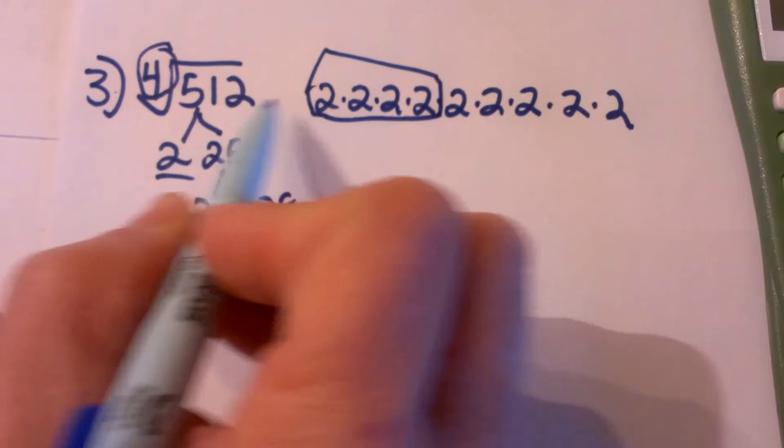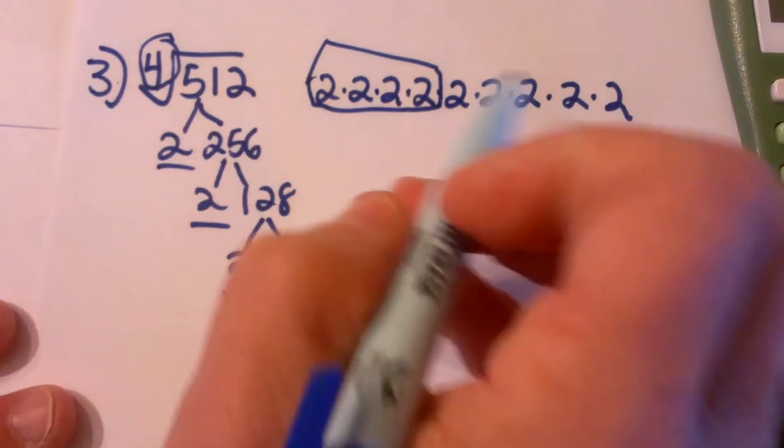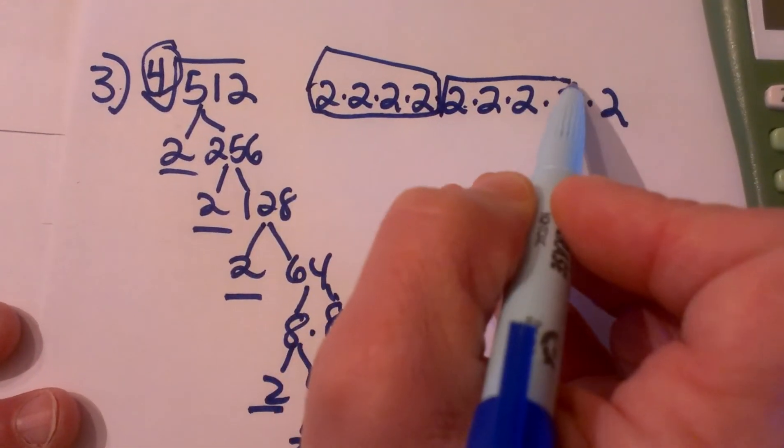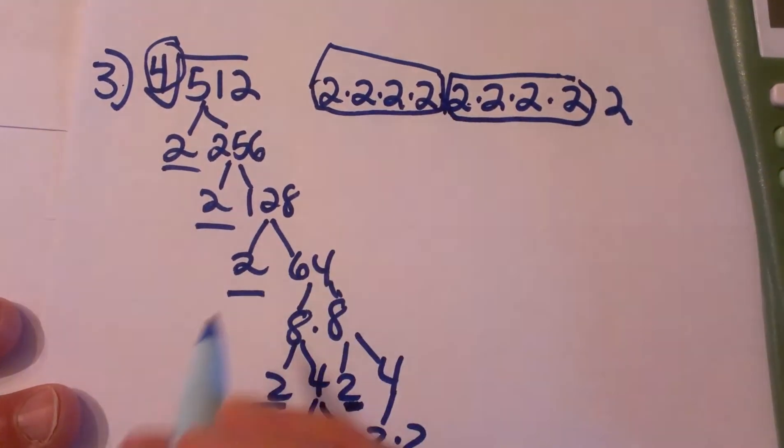So those 4 come out of the radical as a 1, 2, and then these 1, 2, 3, 4 come out of the radical as a second 2.